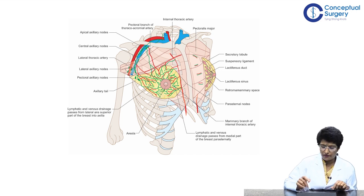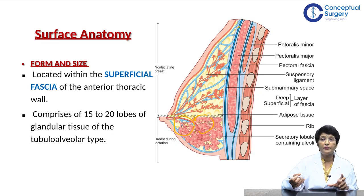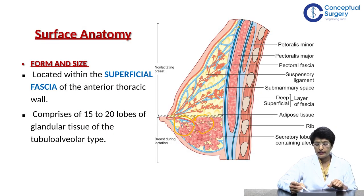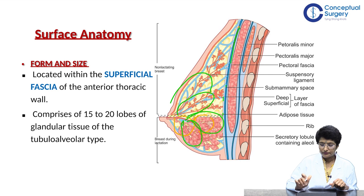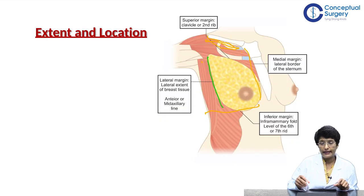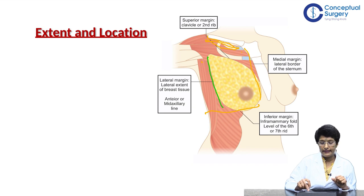This is the area that I'm going to focus on. Let us start with where the breast is located. The breast is located within the superficial fascia and comprises about 15 to 20 lobes. If you look at what is the extent of the breast — because the extent is important if you're going to remove the breast — you need to know how far you have to go to get the entire breast out.